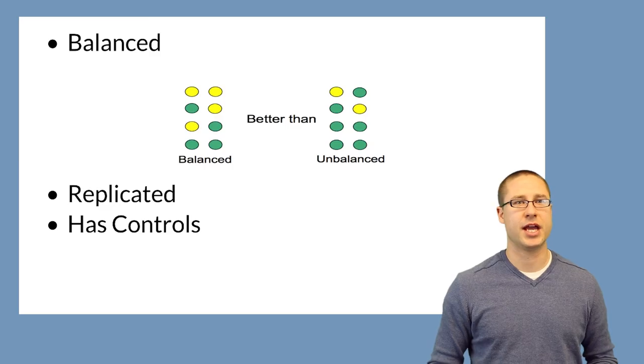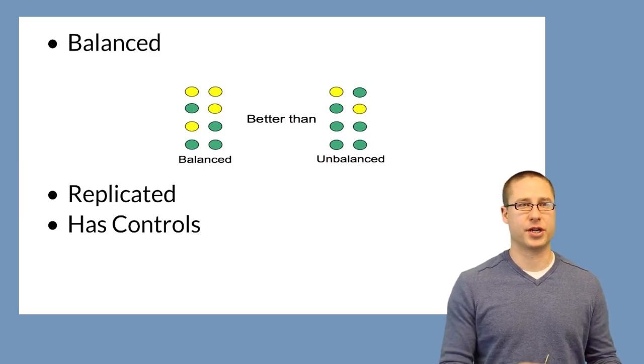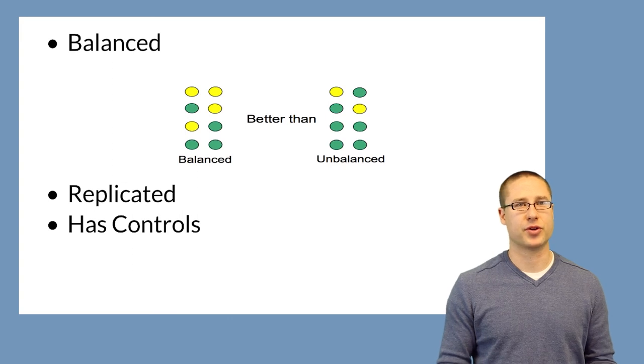There are some other good study characteristics worth mentioning — and there's a long class that can be given on experimental design. In general, it's better to have a balanced design: if you're going to do treated and control, you should have about equal numbers of treated and control samples.